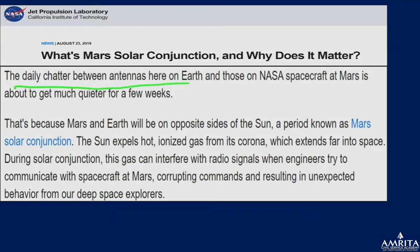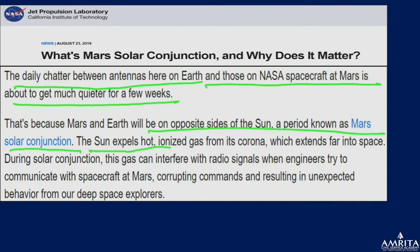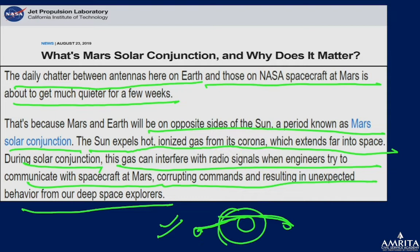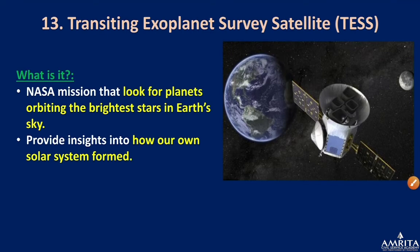During solar conjunction, daily communication between Earth antennas and NASA spacecraft on Mars gets much quieter for a few days. The Sun expels ionized gas from its corona that extends far into space, and during conjunction this gas interferes with radio signals — corrupting commands and causing unexpected behavior from deep space explorers. Any signal passing between Earth and Mars must travel through the Sun's interfering rays.